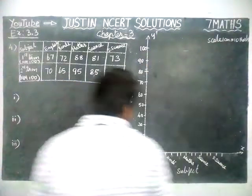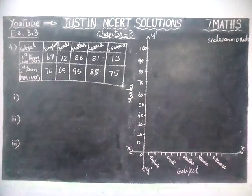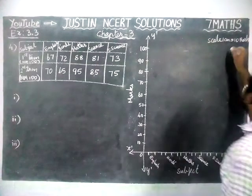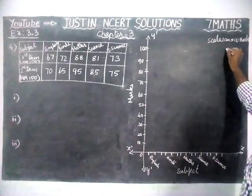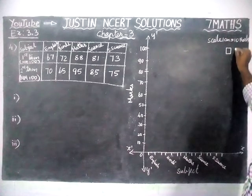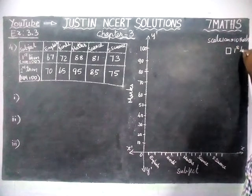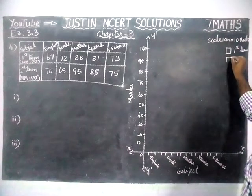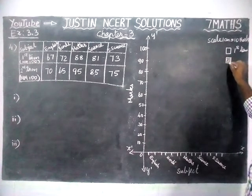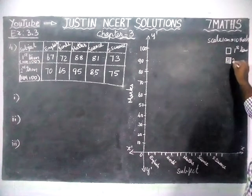Now we are going to draw the bar graph for the given values. To differentiate the marks, we will use an empty box for first term, and for second term we will use cross lines. This helps differentiate the two terms.